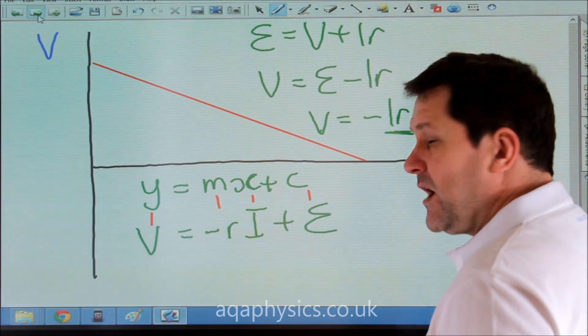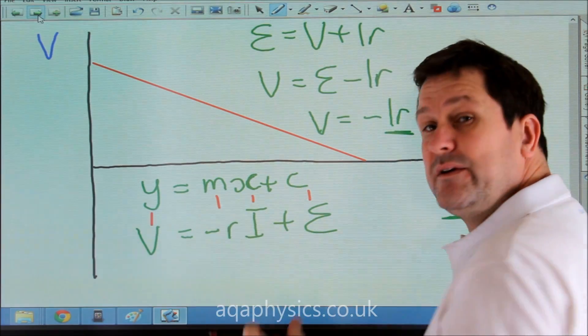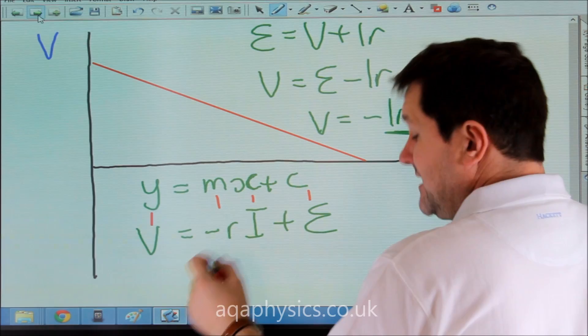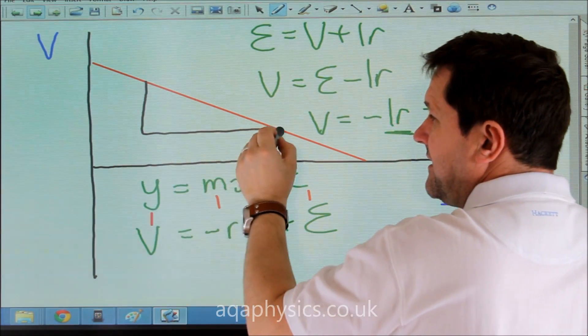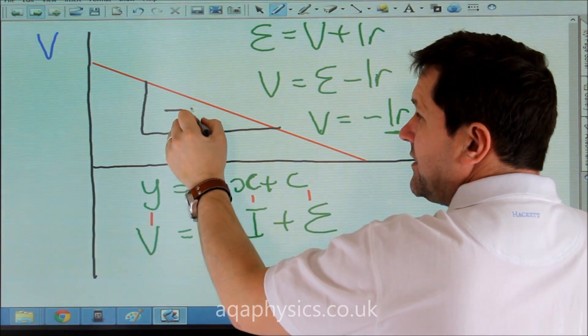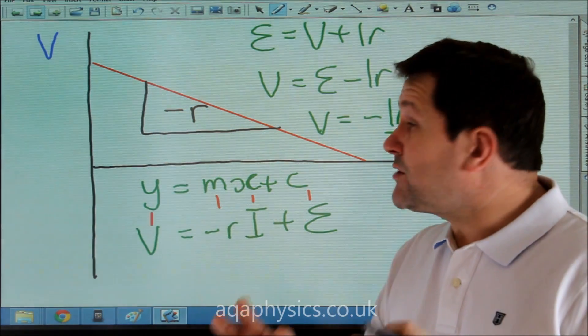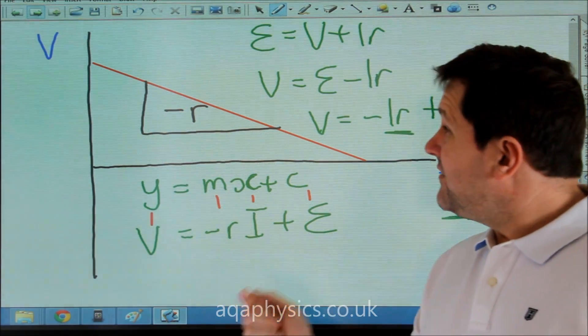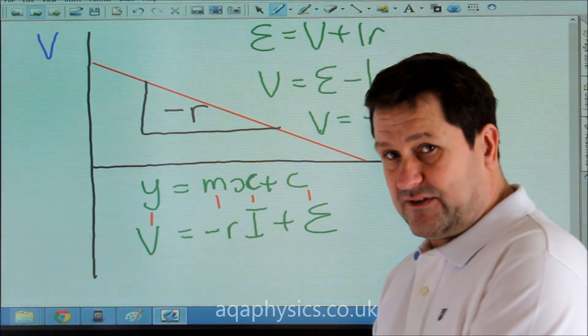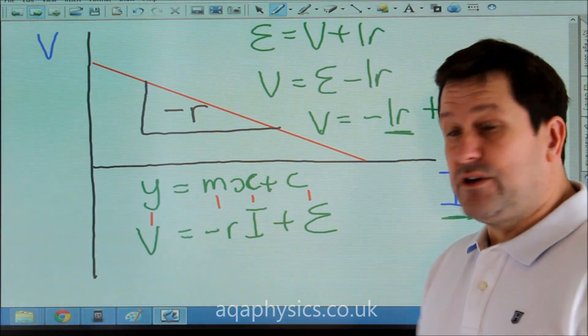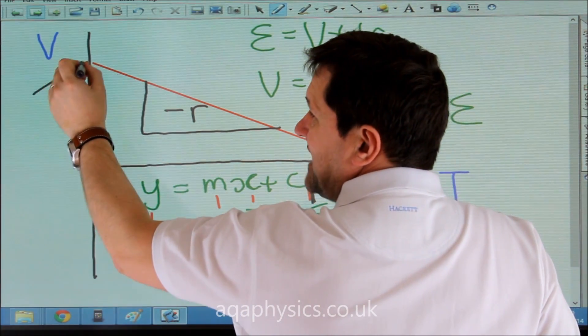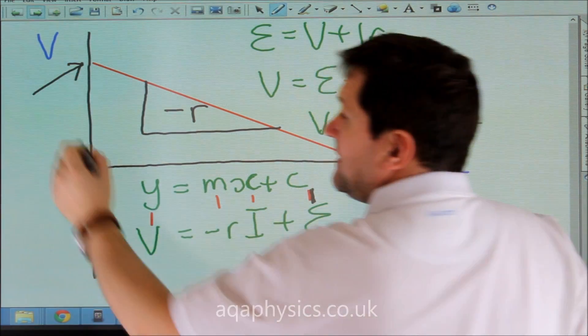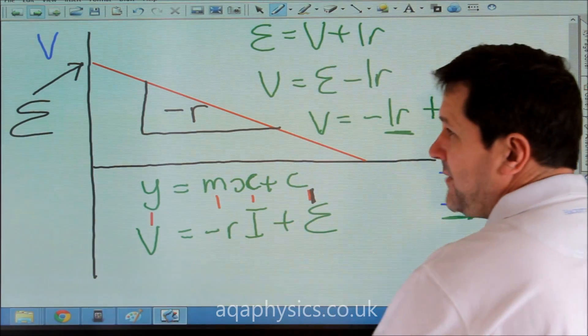Hopefully from your GCSE maths, you'll remember that M is the gradient. So in this case, the gradient here is minus R. So I could use the gradient to work out the internal resistance of my battery. I could also use this here, C, my Y-intercept, to give me the EMF of my battery.